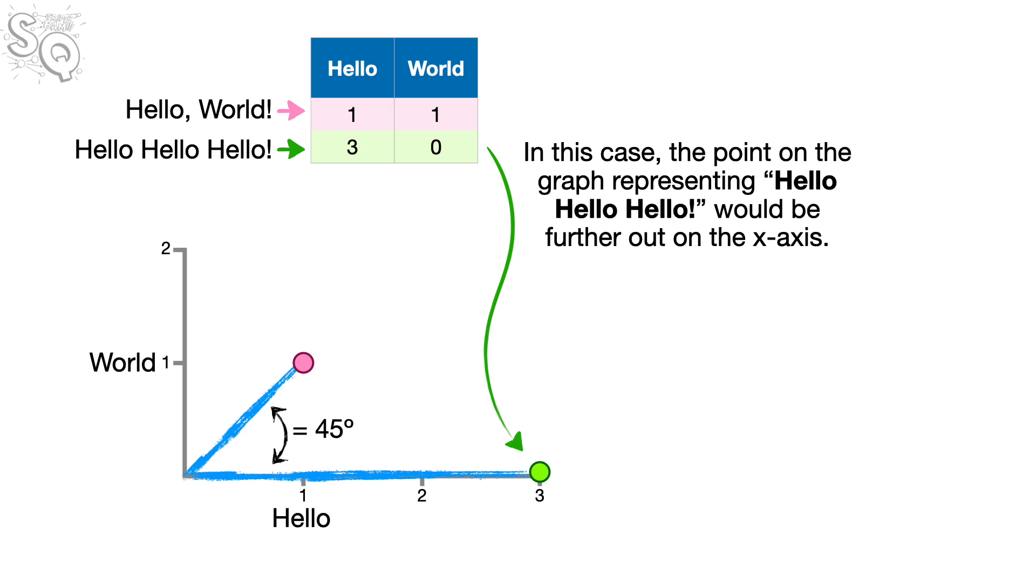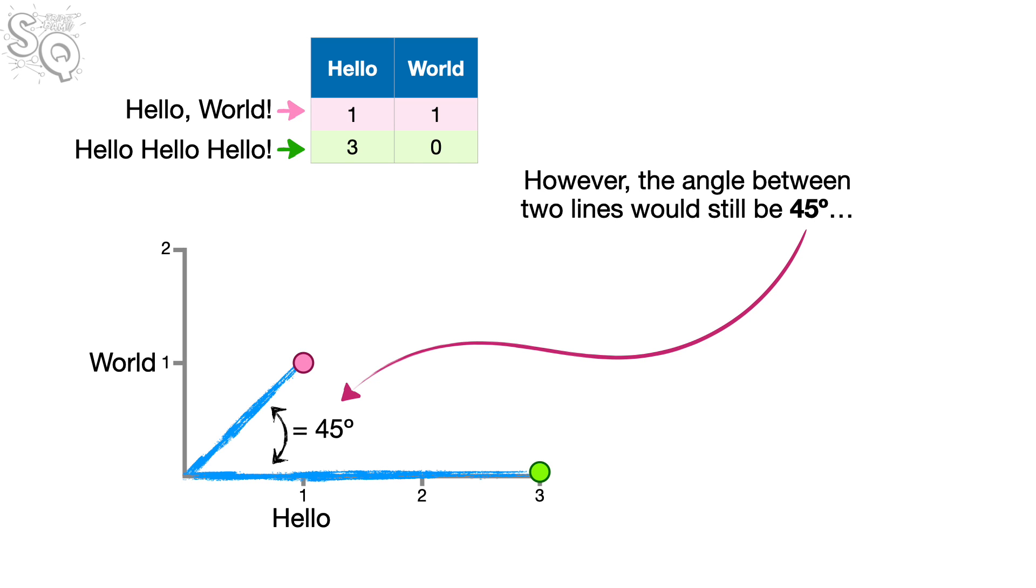In this case, the point on the graph representing Hello, hello, hello! would be further out on the x-axis. However, the angle between the two lines would still be 45 degrees.